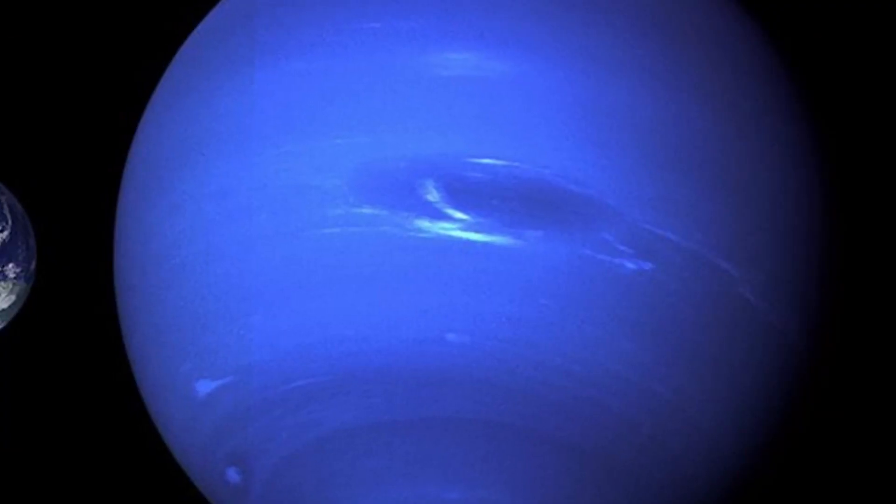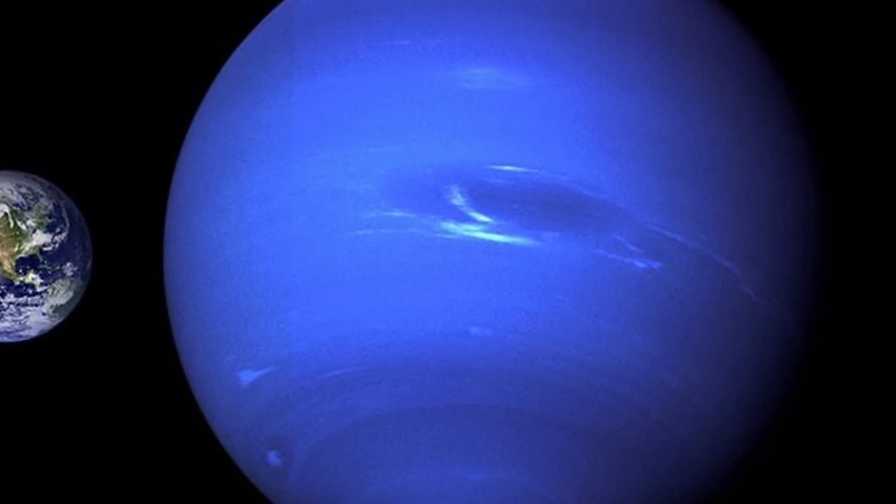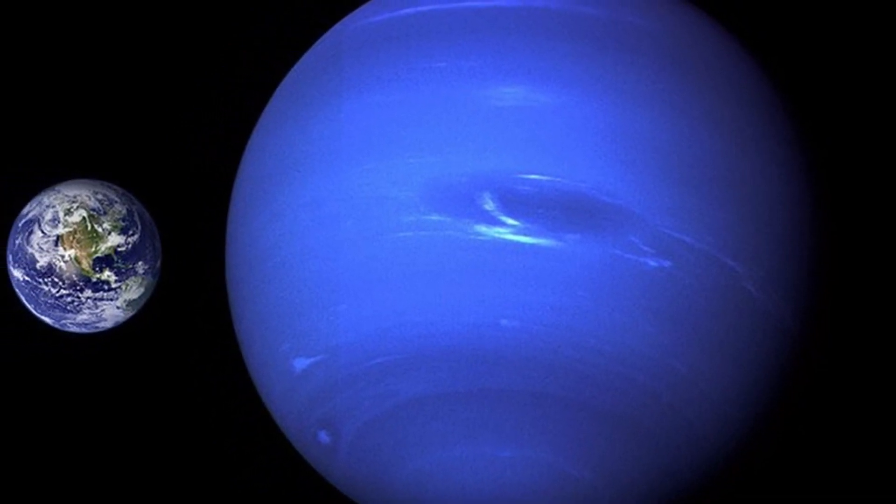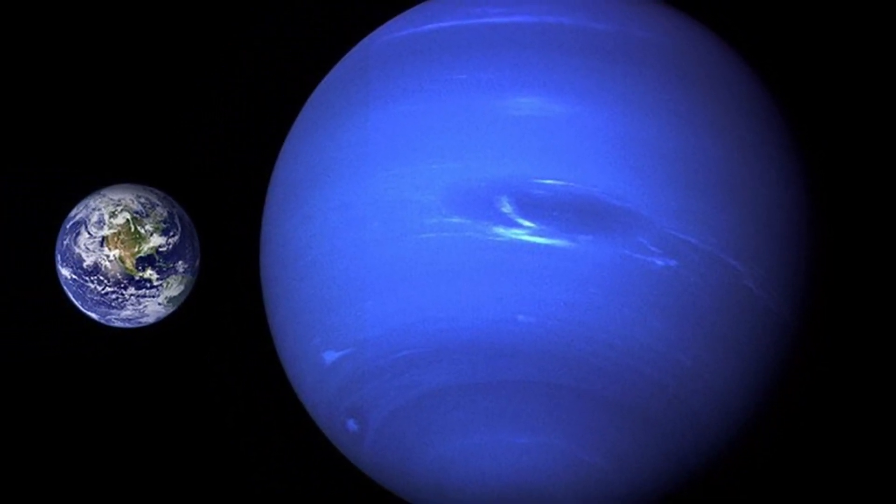Neptune is four times wider than Earth. If Earth were a large apple, Neptune would be about the size of a basketball.